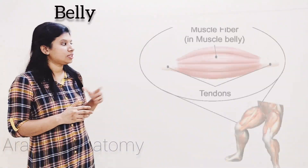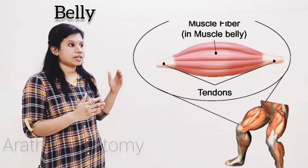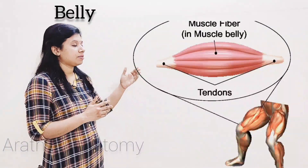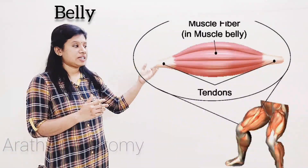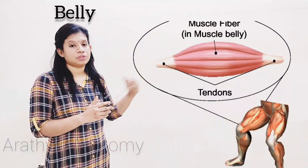The next one is called as belly. What is belly? Belly means, as you can see in the diagram, it is a fleshy, contracted part of the muscle.